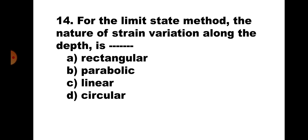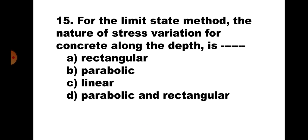Question number fourteen: For the limit state method, the nature of strain variation along the depth is — (a) rectangular, (b) parabolic, (c) linear, (d) circular. The strain diagram for concrete or steel is a straight line, so the strain variation is linear. The correct answer is (c) linear.